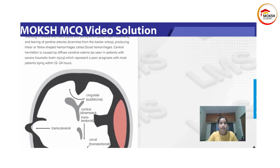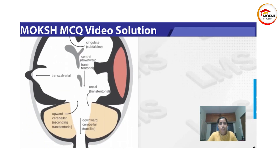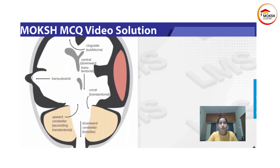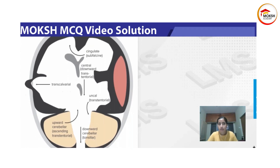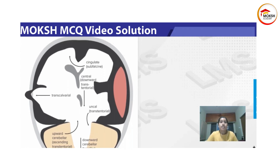I'll just show you an image so you can have a better understanding of the different types of herniations. There's not much to explain in this case — just for you to know which area of the brain they're referring to when talking about subfalcine, transtentorial, or ascending versus upward and downward herniation.